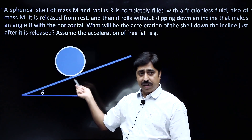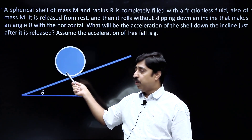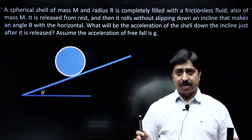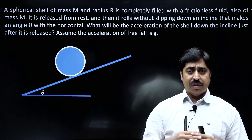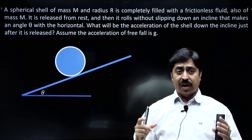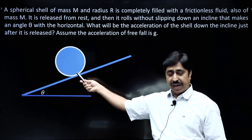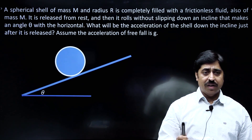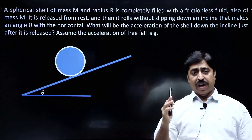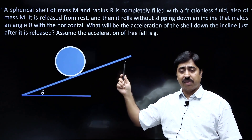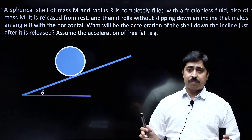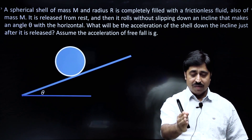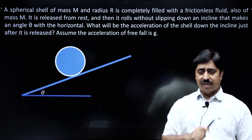The white colored shell has mass m, and the blue colored liquid inside is also having mass m. There is no friction between the shell and the fluid. This assembly has been placed on an inclined plane making angle theta with the horizontal. We have to find the acceleration assuming no sliding. Pause the video and give it a try.